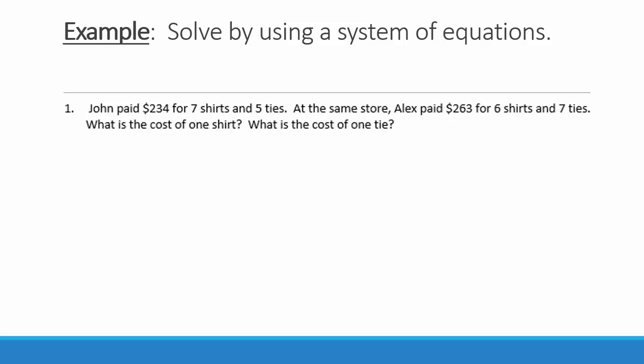John paid $234 for seven shirts and five ties. At the same store, Alex paid $263 for six shirts and seven ties. What is the cost of one shirt and what is the cost of one tie? We are going to assume that all shirts at this store cost the same amount and all ties at the store cost the same amount.